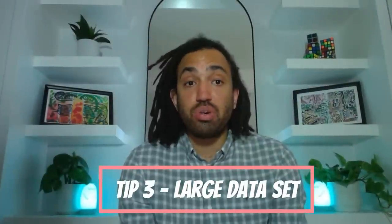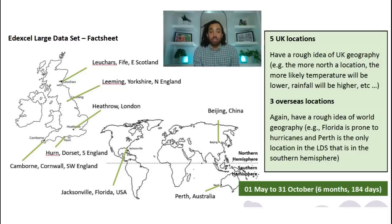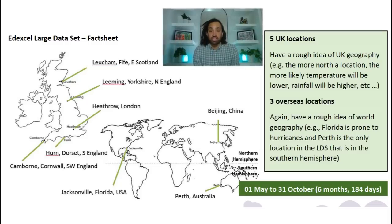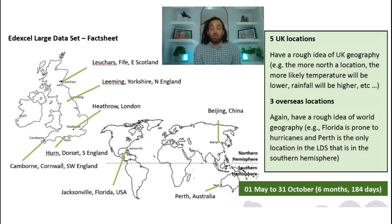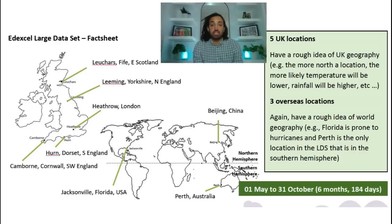Tip number three and we're talking Edexcel large data set. Now I have a fact sheet in my Google Drive which you can access link in the description. I suggest that you read through it. I'm just going to go over a few key points right now. There are eight different locations, five of them are in the UK, three of them are overseas. Australia is the only one which is in the southern hemisphere so remember the season switch for that and all the data is between May the 1st and October the 31st.